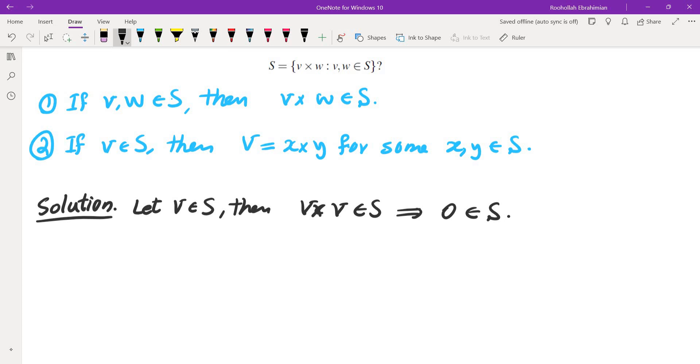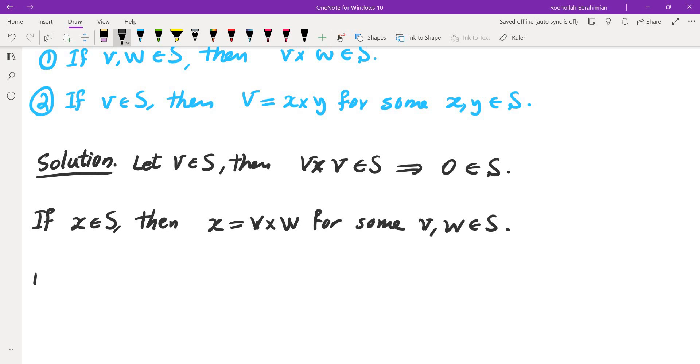Now, one other thing is clear. If V cross W is in S, then W cross V is also in S, which means if you have an element in S, then negative of that would also be in S. If X is in S, then X is V cross W for some V and W in S. Now, this is by assumption. Now, W cross V is in S by assumption again.